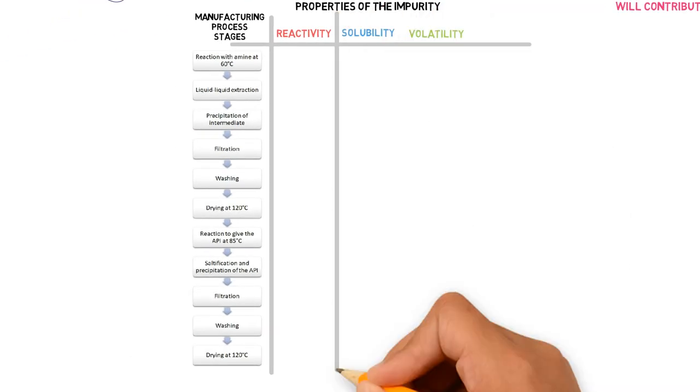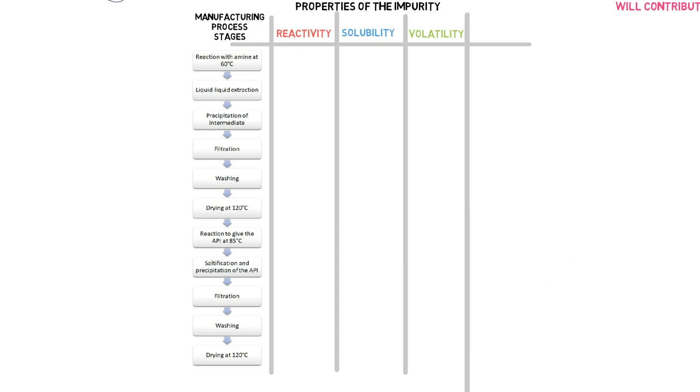The property that will cause the purge depends on the stage. For reaction stages, we must consider the reactivity and volatility factors. For work up stages, such as extraction, centrifugation, filtration, and washing, the solubility factor must be considered. For drying stages, only the volatility factor can be considered.